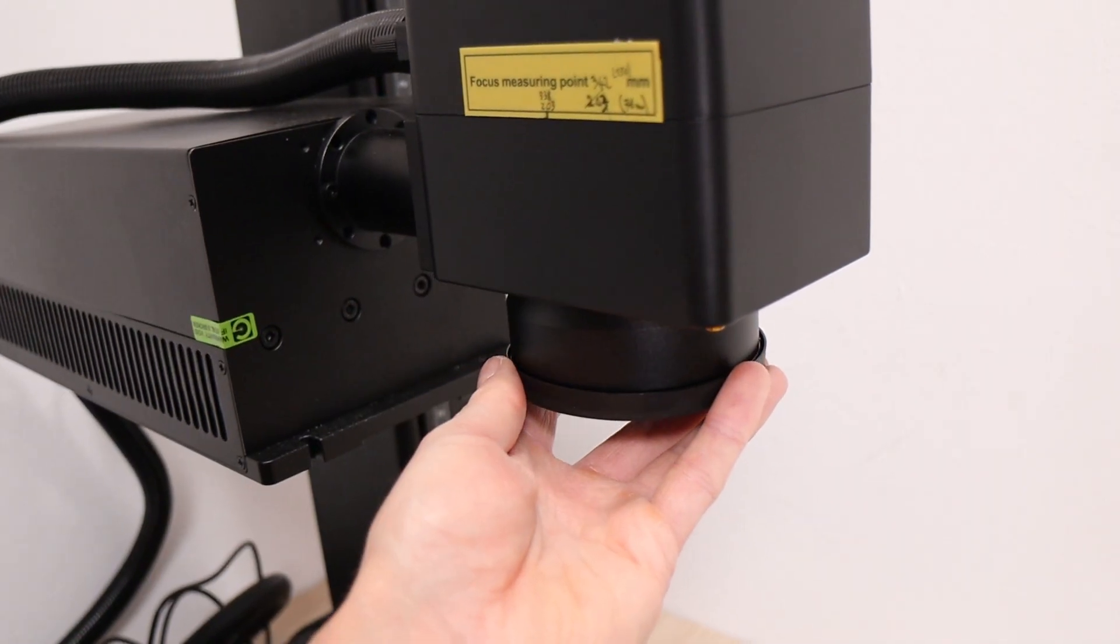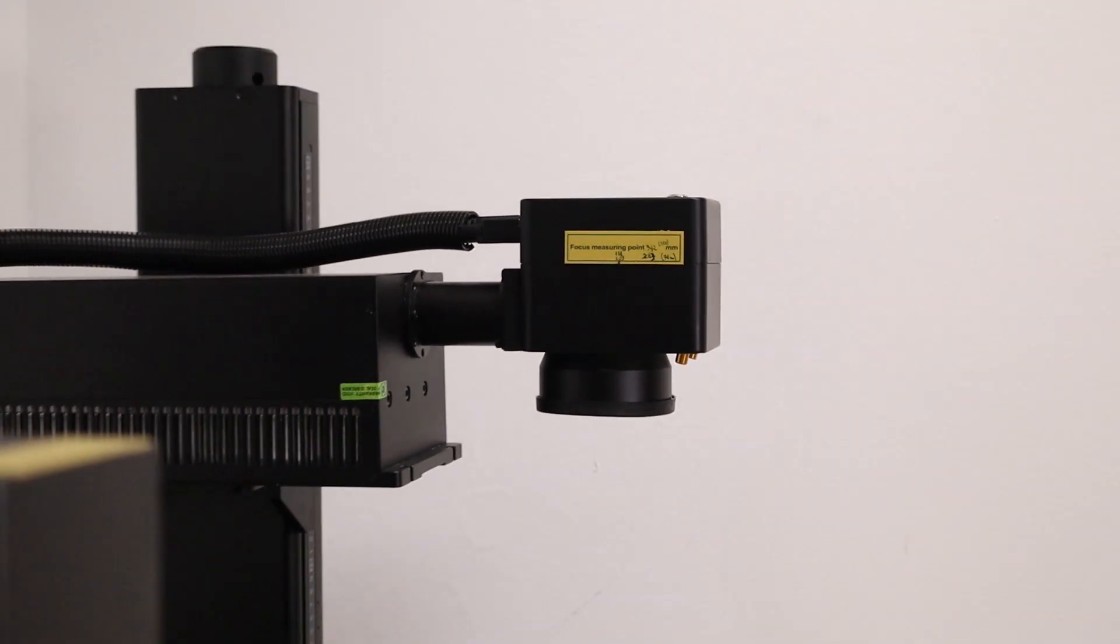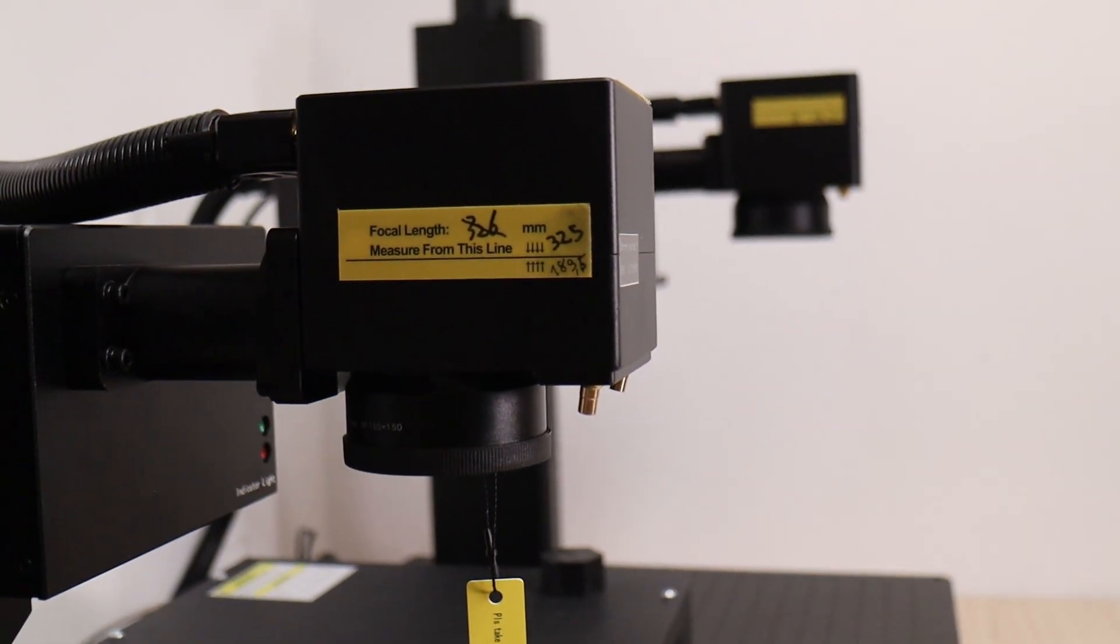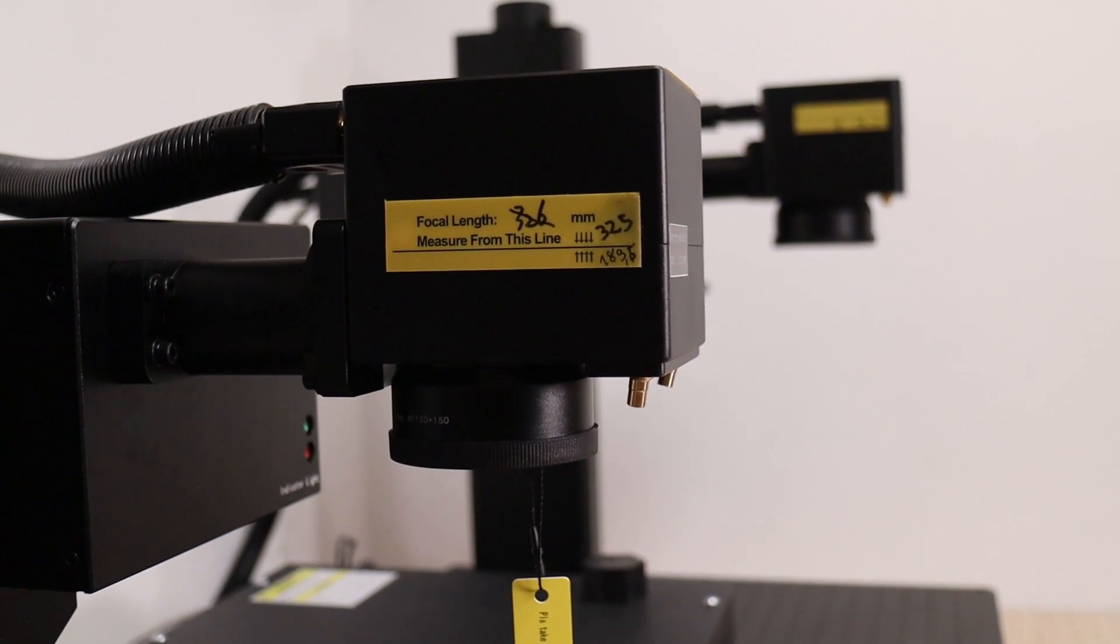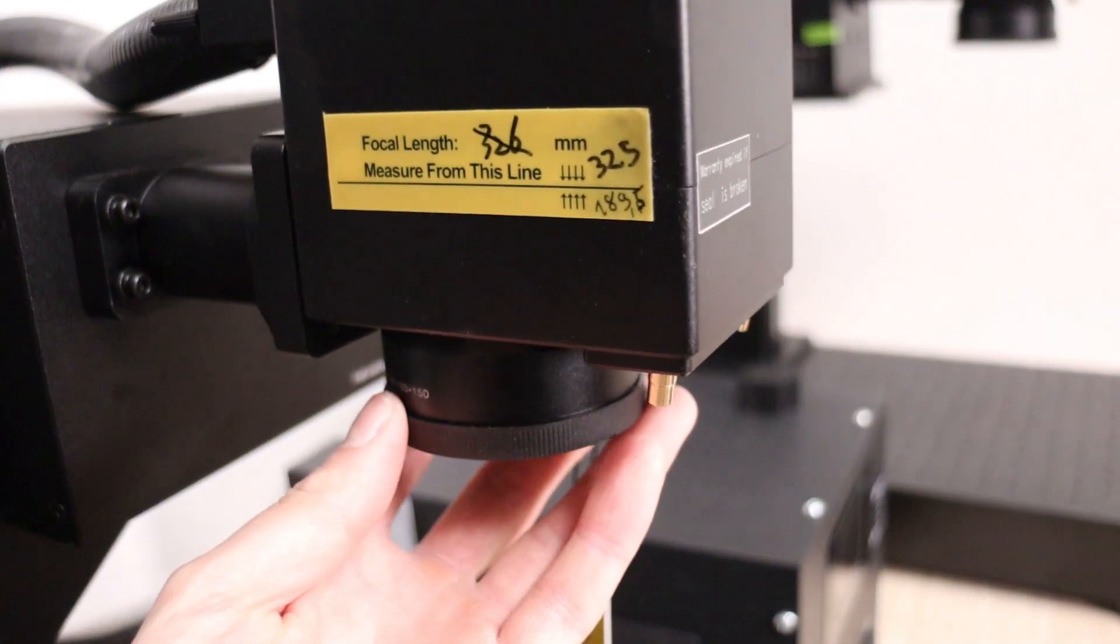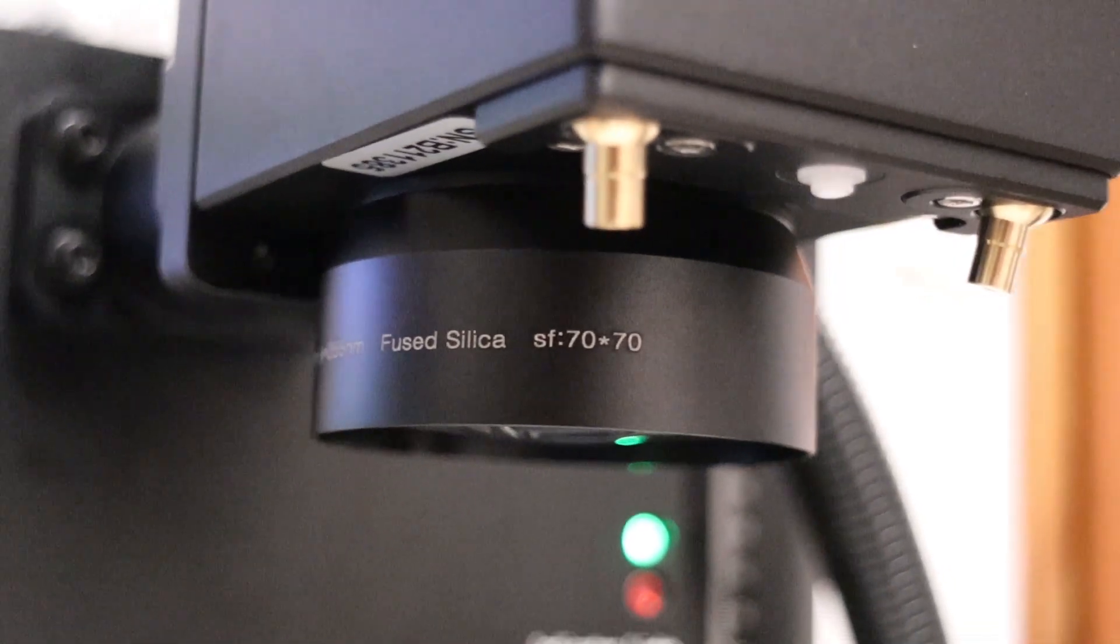Both machines, however, come with lenses that share the same optical parameters. One for a 150mm working area, and one for a 70mm working area. In this video, I'll be using the 150mm lens for all demonstrations unless I specifically mention switching to the 70mm lens.